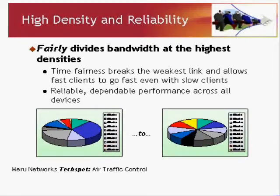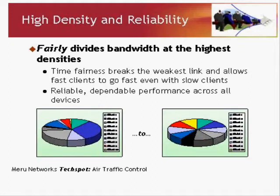For example, 11N is faster than 11G or 11A, and 11G is faster than 11B. When you have 11N, 11G, and 11B all on the same network, the weakest link is the 11B client — it dominates because it takes so much more time to transmit the same number of packets. We don't like that. So we have this concept of time fairness, where we prevent one client from dominating. That makes fast clients able to speak — they can go as fast as they ordinarily would, even though slow clients are present. It gives you reliable and dependable performance across all types of devices: the fast ones, the slow ones, the powerful ones, the weak ones — they all get their fair share of time on the network.